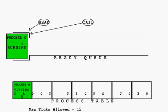Next, I would like to point out the text at the bottom of the screen labeled Max Ticks Allowed that equals 15. Max Ticks Allowed is some amount of time defined by the operating system of a computer. This amount of time is a limit for which any given process can run while in the head or first position of the ReadyQ. In this model, our limit is defined to be 15 clock ticks.